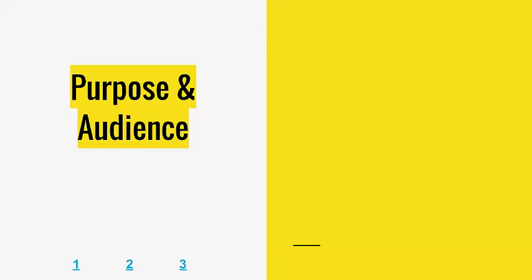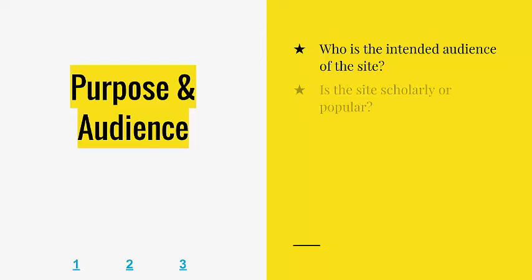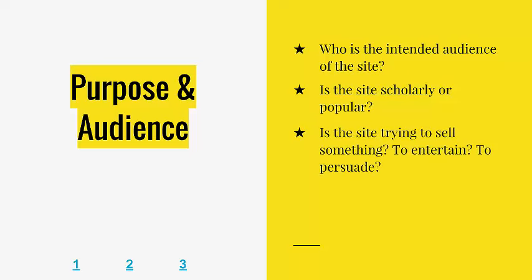First, we must look at the purpose and audience. To do this, ask yourself the following questions: Who is the intended audience of this site? Is the site scholarly or popular? Is the site trying to sell something, to entertain, or to persuade? And what is the overall purpose of the site? Answering these questions can help you decide if you can trust this information. Pause the video and visit the three practice sites to try to answer these four questions.